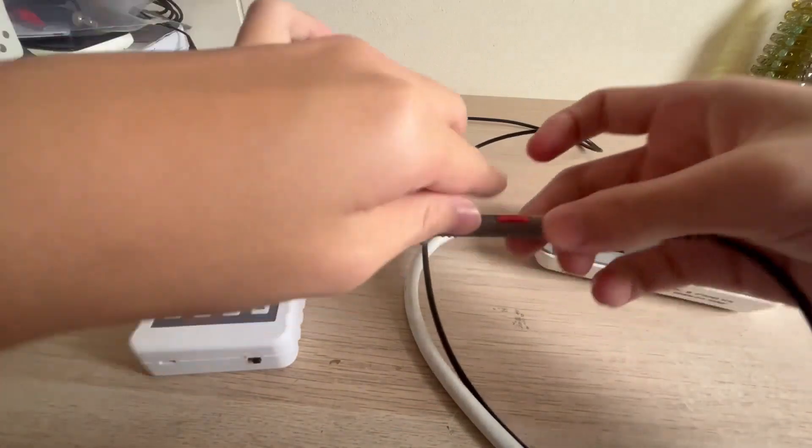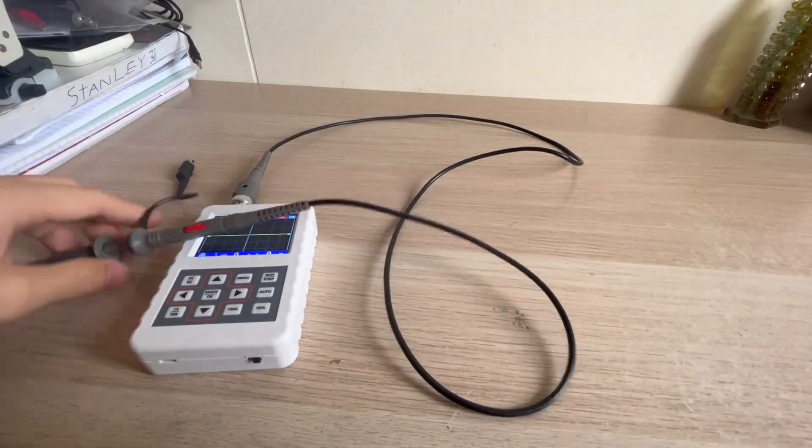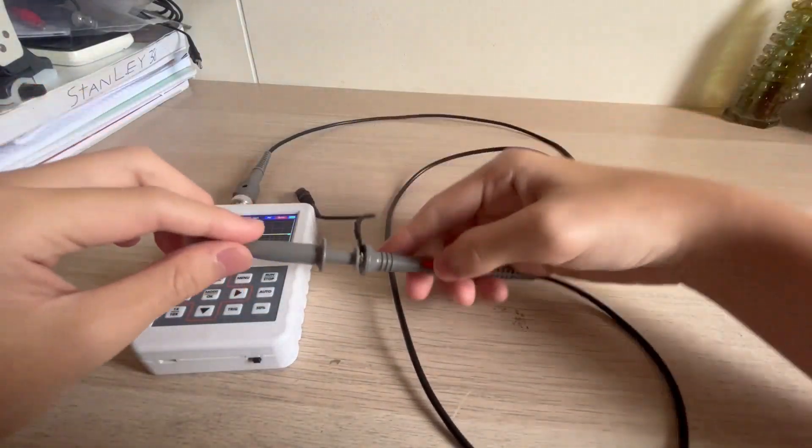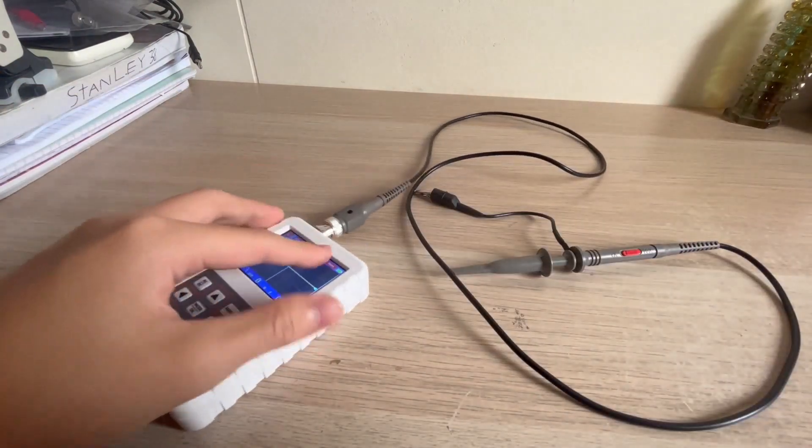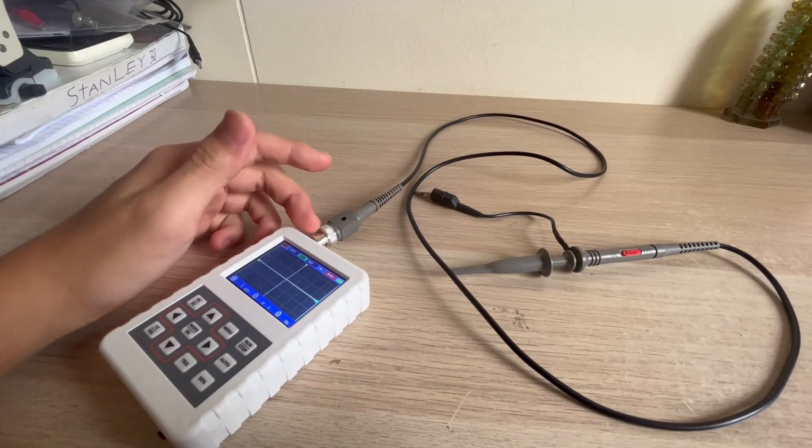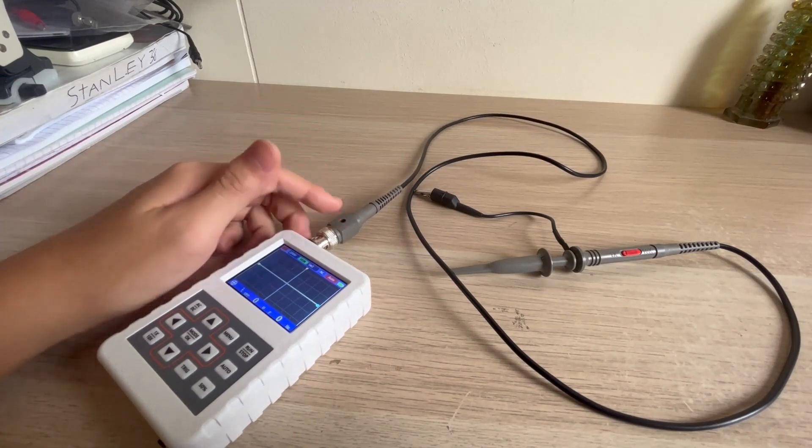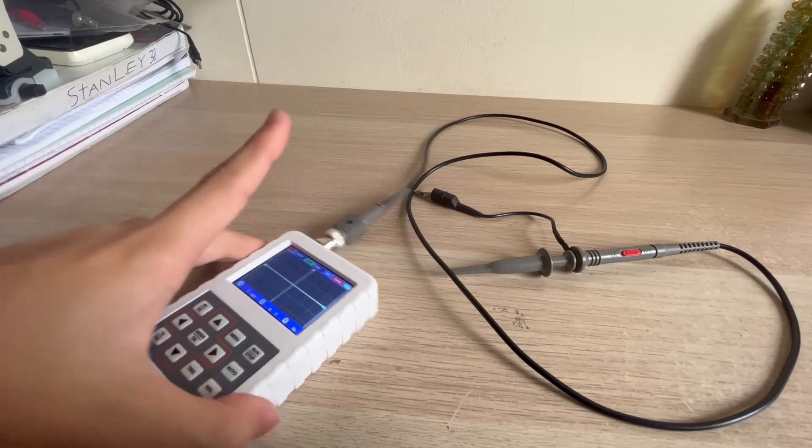So basically, the probes actually work. The 1x and 10x attenuation works. It's quite easy to get electrocuted just by touching this little innocent contact right here that doesn't really seem to do much harm but it may cause some harm.